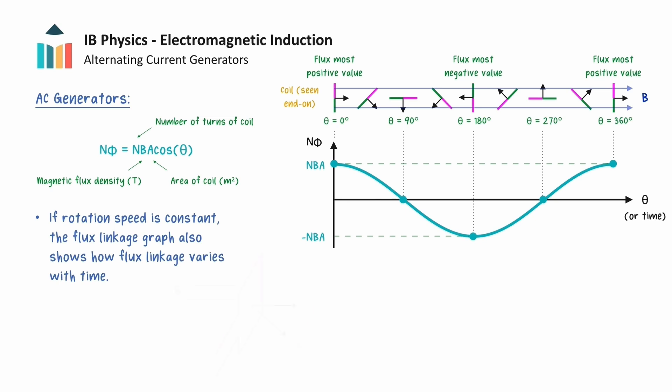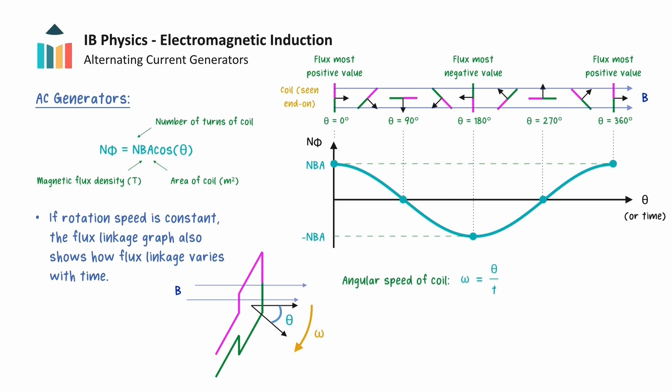More specifically, if we denote the angular speed of the coil as omega, then this is equal to the rate of change of the angle theta with time. At time t equals 0, we have theta equals 0. So if the angular speed of the coil is constant, the angle theta as a function of time will be given by theta equals omega t. Making this substitution in the flux linkage equation, we see that the flux linkage does indeed vary with time as a cosine wave.